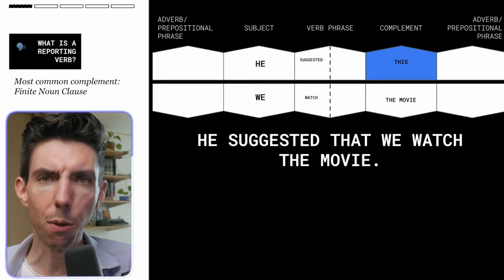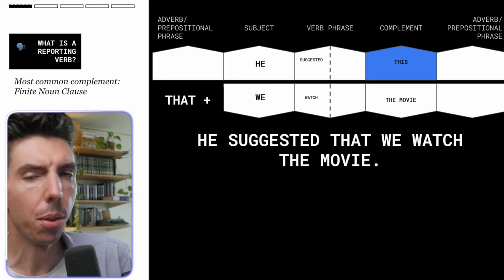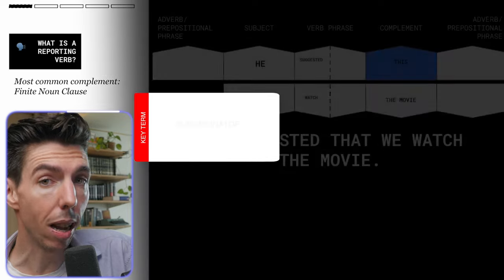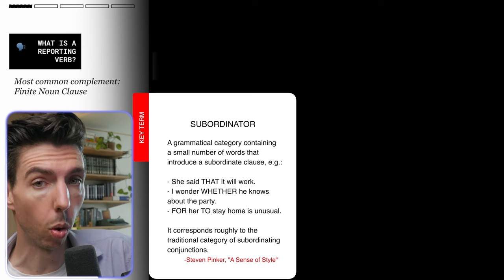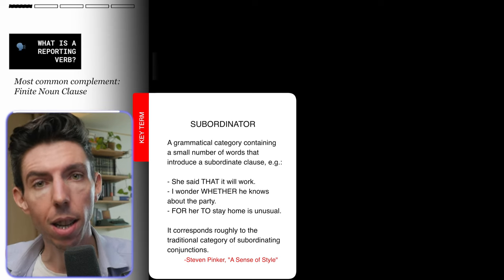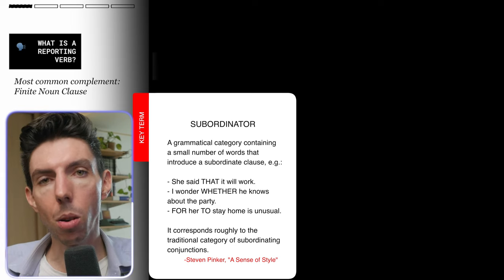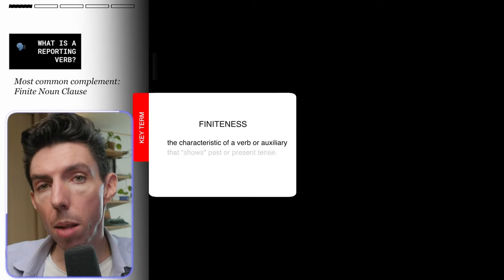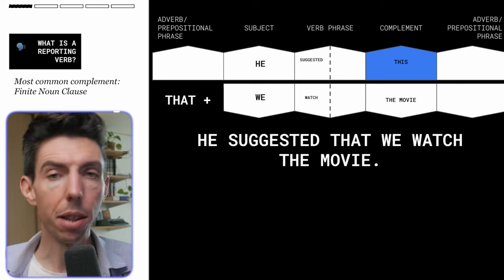How do we get that finite clause into the complement position of the main clause? What we can do in English is attach the word 'that.' In syntax, we call that a subordinator. You can see it's made up of 'sub' and 'order' — the order in which things come, and 'sub' means below, like submarine or sub-zero. So a subordinator knocks it down to a lower level. We need to subordinate the finite clause into a non-finite clause by attaching the subordinator 'that.'